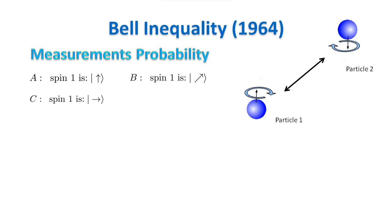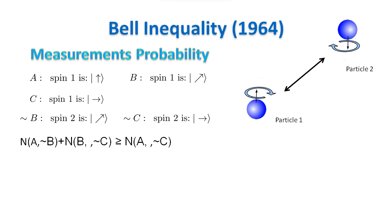We define property C to be particle 1 in the state up along the x-axis. We define property not-B to be particle 1 in the state down along the axis at 45 degrees in the x-z plane, and therefore particle 2 to be in the state up along the same axis, because the two particles are in the singlet state. Finally, we define property not-C to be particle 1 in the state down along the x-axis and therefore particle 2 to be in the state up along the same axis.